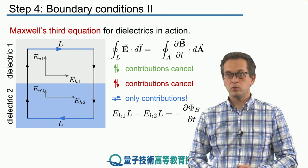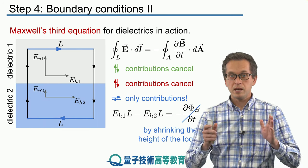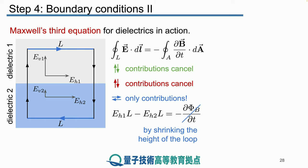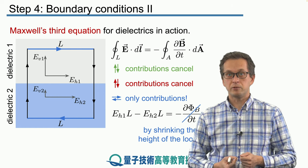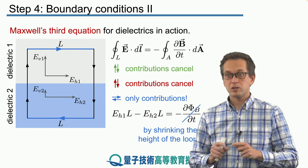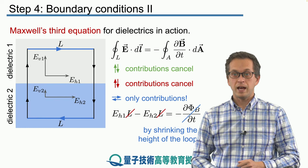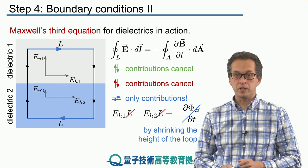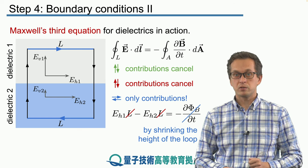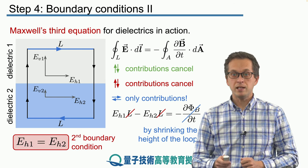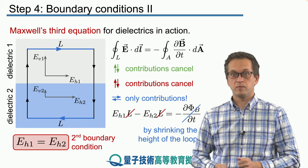But, again, what we can do is use the following trick. We can take our loop and shrink its size. We can shrink the height, this height of the loop to zero. So all we are going to left is the contribution from this part and this part. But that's just the line. It's not a surface. Therefore, the surface integral of the change of the magnet flux is going to be zero. And if that is zero, we can simply divide by L. And what we get is our second boundary condition for the horizontal components of the electric field. Namely, we get that EH1 is equal to EH2.